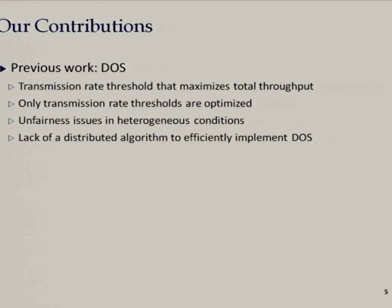Let me briefly review the limitations of previous work, because this is the gap we are closing. The current work on distributed opportunistic scheduling analyzed the transmission rate thresholds — specifically, the threshold above which you decide to transmit — to optimize performance, looking at maximizing overall throughput in the network. The main limitations are: they only optimize the thresholds, whereas to optimize overall performance you have to look at both the thresholds and the access probabilities. Second, maximizing total throughput leads to an unfairness problem, potentially starving stations with poor channels.